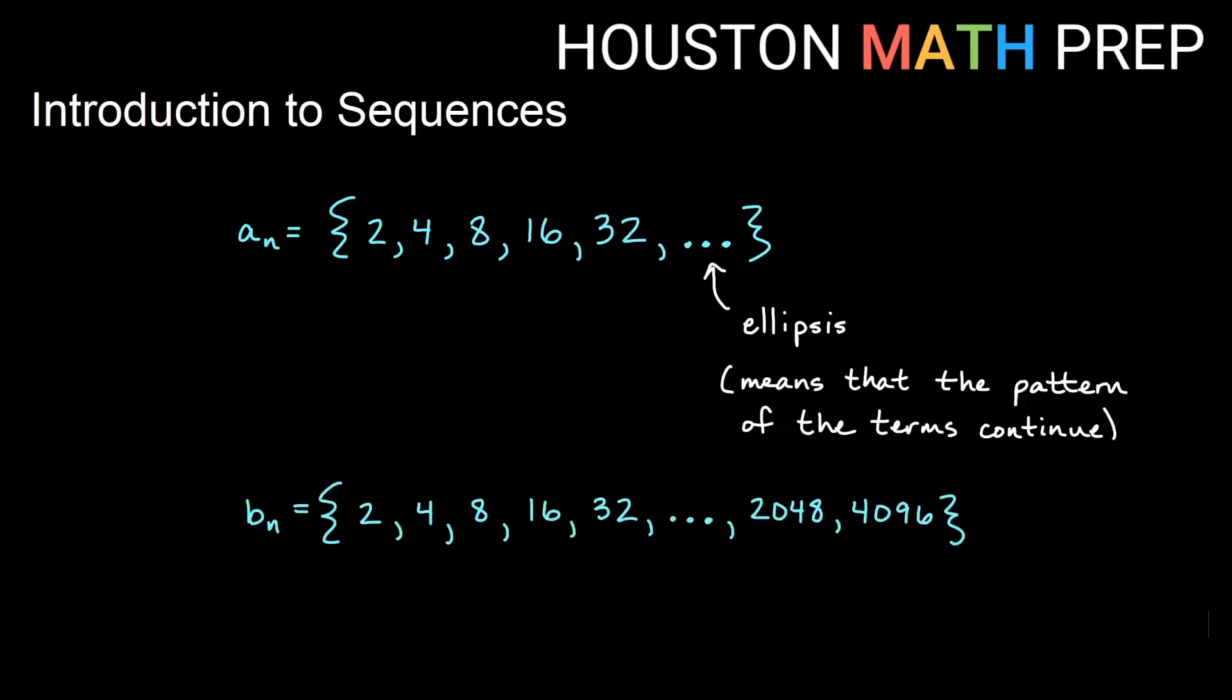Here I have another sequence. Notice I've called it b sub n so you don't confuse it with the first one. That's like with functions when we say here's a function f of x and then we give you another one and we need to call it something else. So my b sub n starts out the same as my a sub n. The terms seem to fit the formula that they're powers of 2. What you might notice though is that the ellipsis is in a different place in my b sub n. It is in the middle versus being at the end.